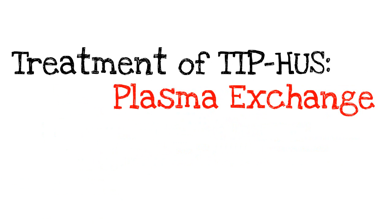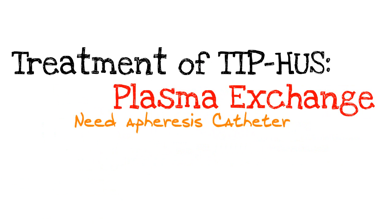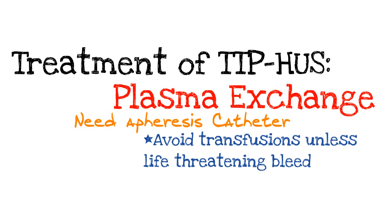The treatment of TTP-HUS is plasma exchange. To do plasma exchange, you're going to need an apheresis catheter. An apheresis catheter is a double lumen catheter that is an extremely wide bore — instead of single dilation, it requires double dilation. Avoid transfusions unless you have a life-threatening bleed. If a surgeon asks you to transfuse platelets greater than 50,000 before placing the catheter, that's not appropriate — you just can't do that in someone with TTP-HUS. It's okay to proceed even if their platelets are very low.